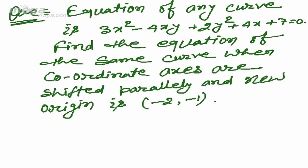Now taking another example: the equation of a curve is 3x² - 4xy + 2y² + 4x + 7 = 0. Find the equation of the same curve when the coordinate axes are shifted parallelly — meaning the x-axis shifts parallel to the x-axis and the new y-axis is parallel to the original y-axis. The new origin in this situation is (-2, -1).